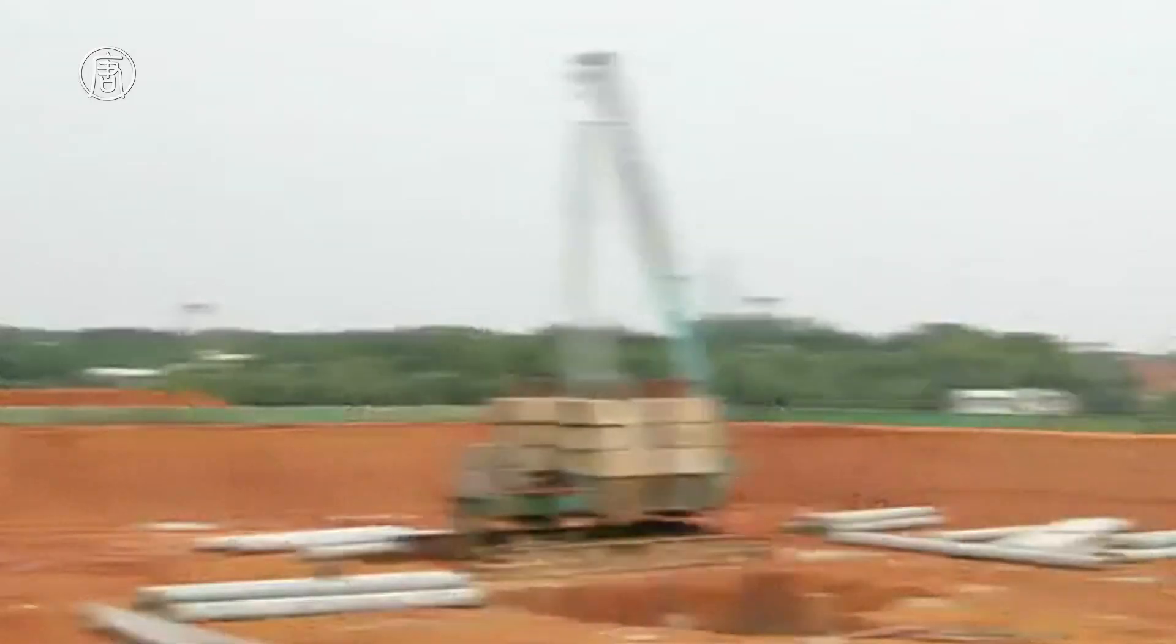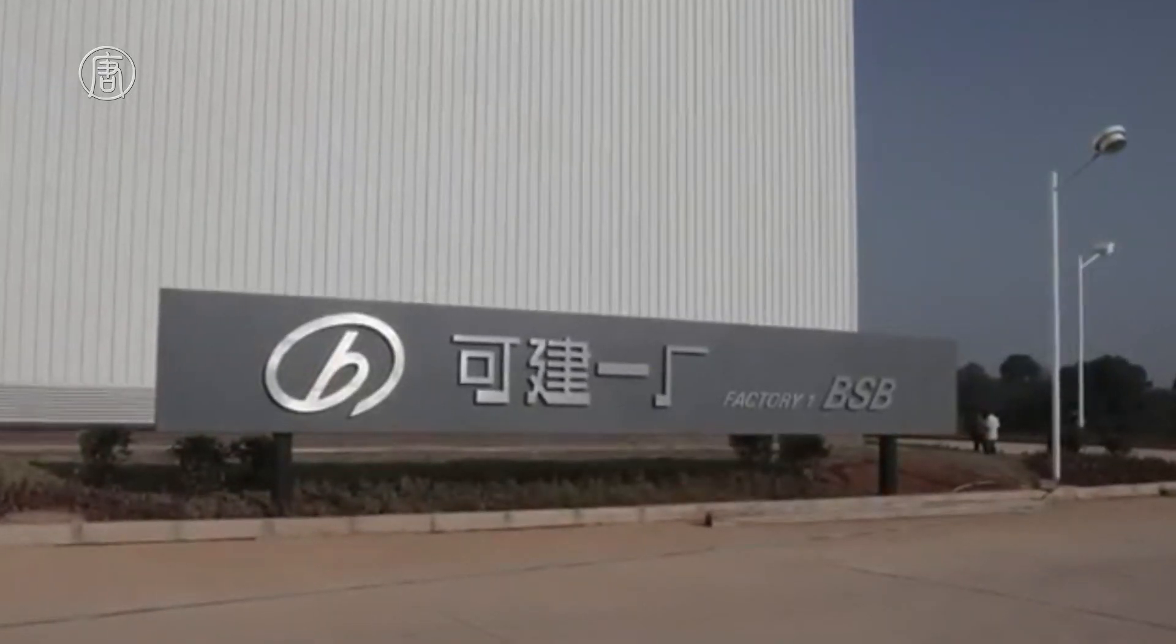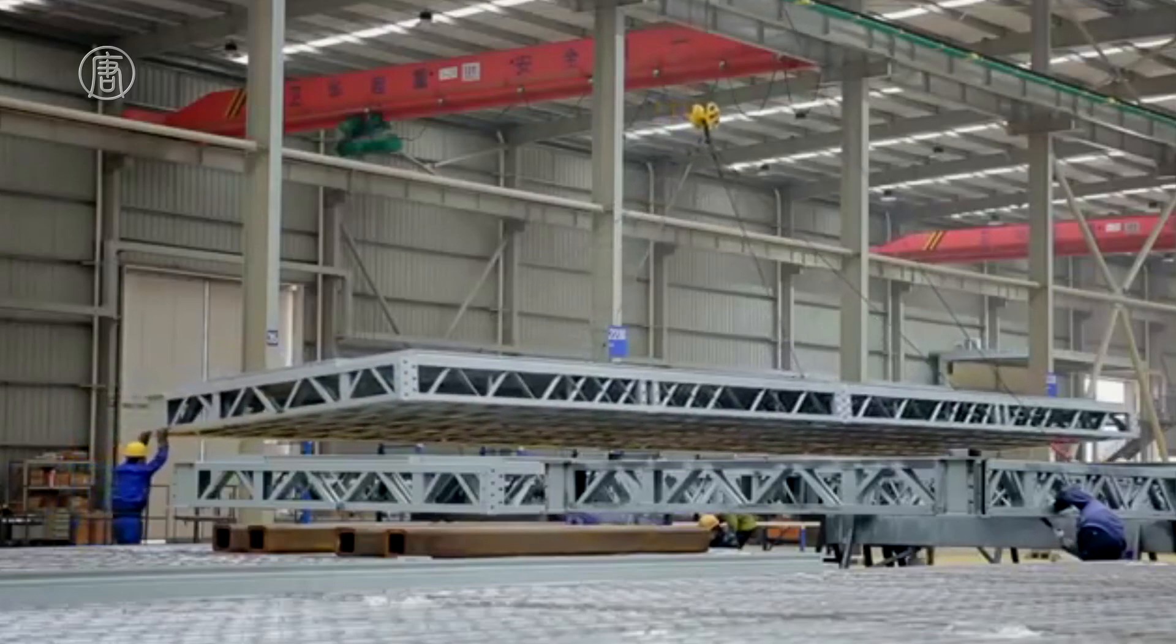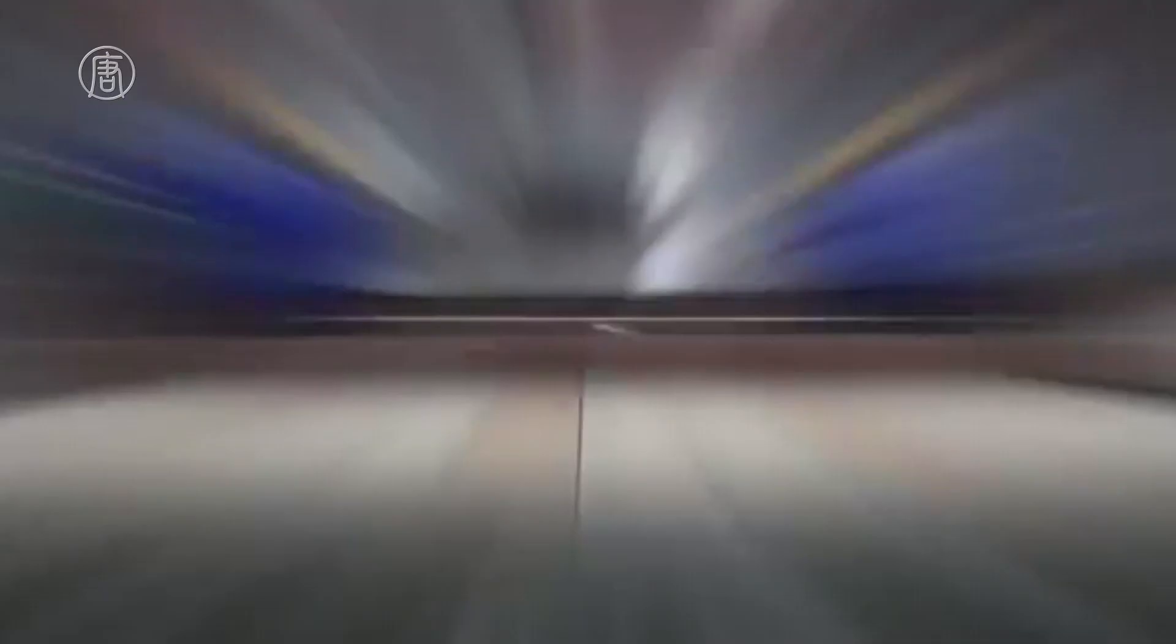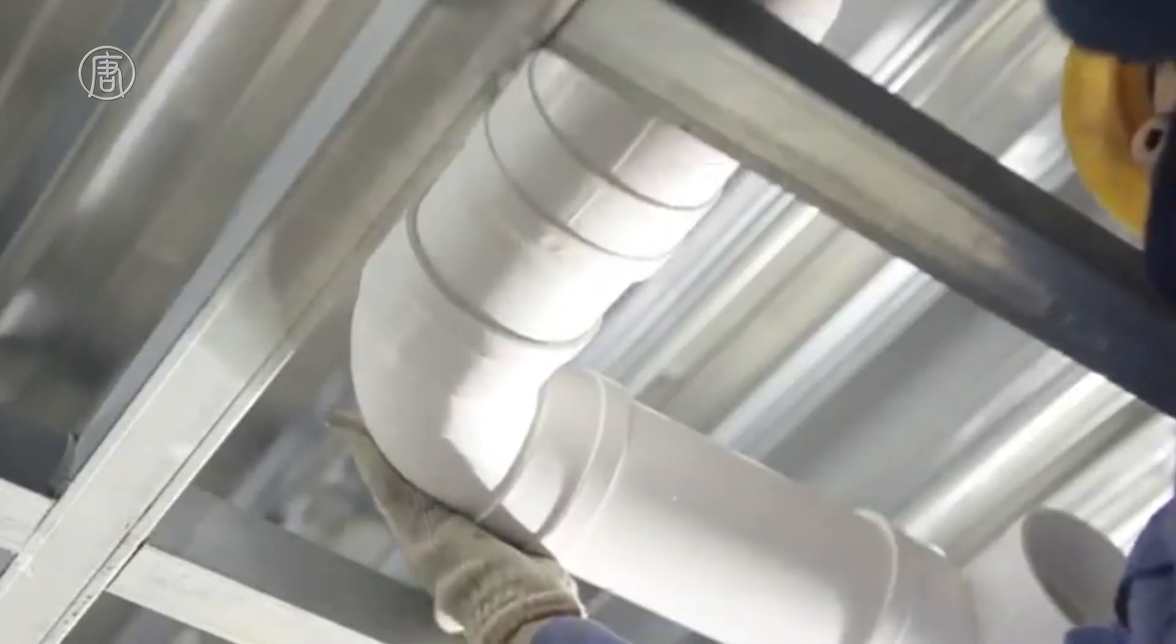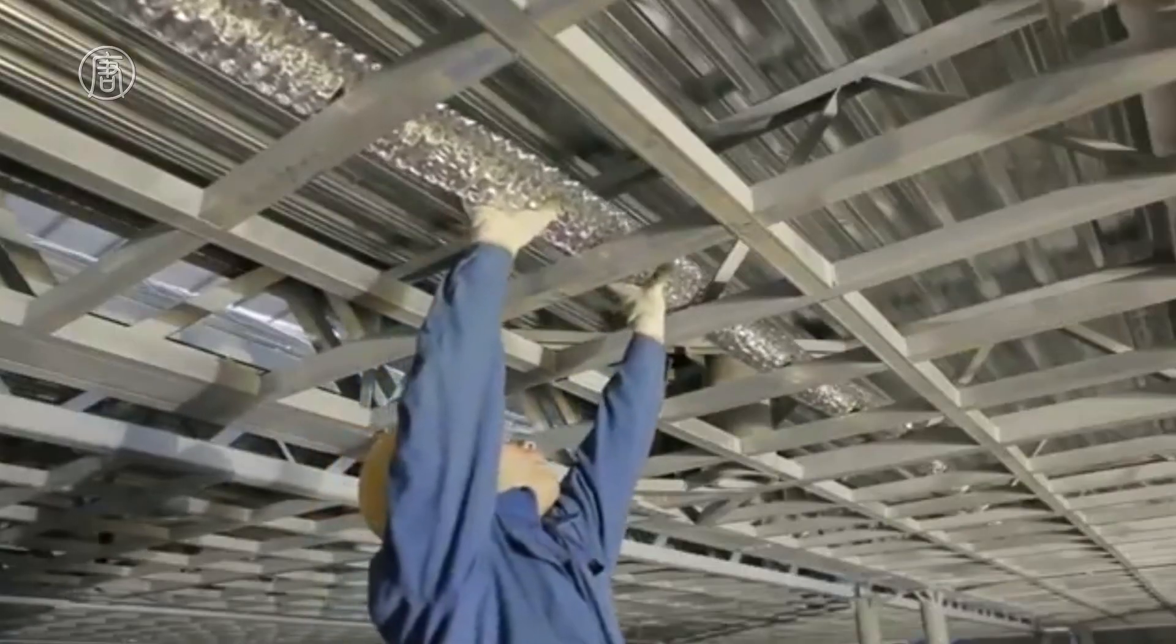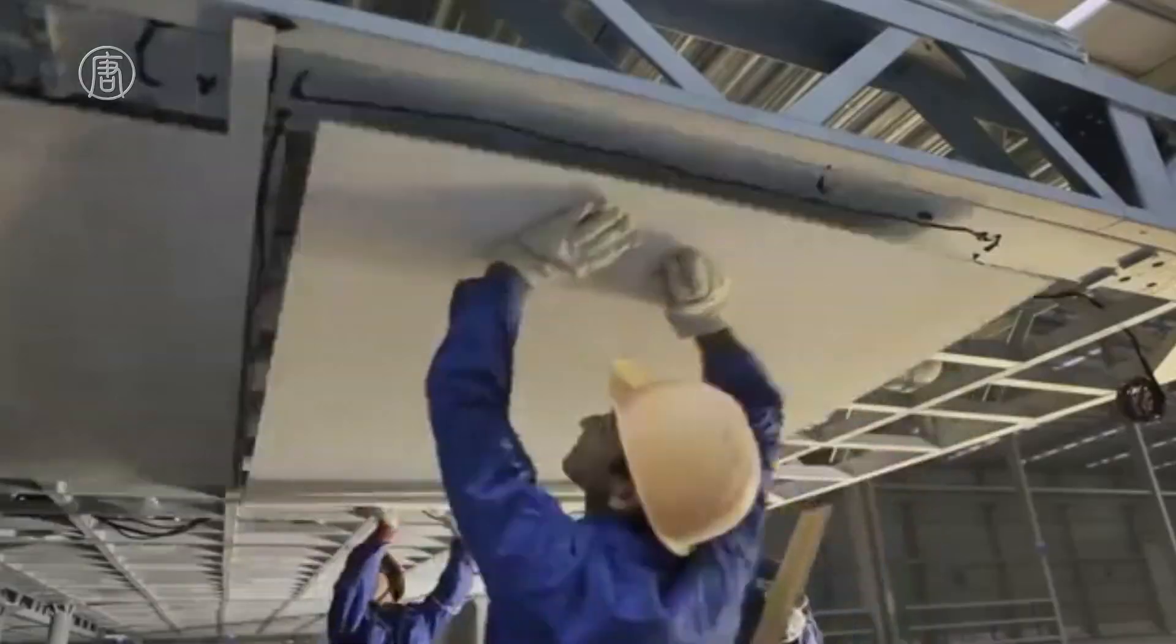So how are they going to complete a 220-story building in such a short amount of time? The answer is prefabricated parts. A prefabricated building is assembled on-site from several factory-built units. So essentially, it's like assembling a building from IKEA instead of making one from scratch.